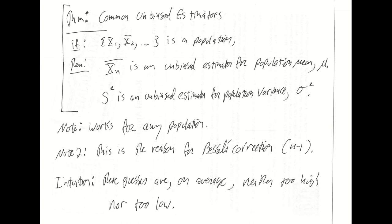There are some very common unbiased estimators we have already discussed, and now that we have this terminology in place we can refer to them as unbiased estimators. If you have any population whatsoever, then the sample mean is an unbiased estimator for the population mean, and sample variance is an unbiased estimator for population variance. These two most obvious and most common estimators are both unbiased, and it's worth noting that this works for any population whatsoever — it is a very general theorem, even more general in some sense than the central limit theorem.